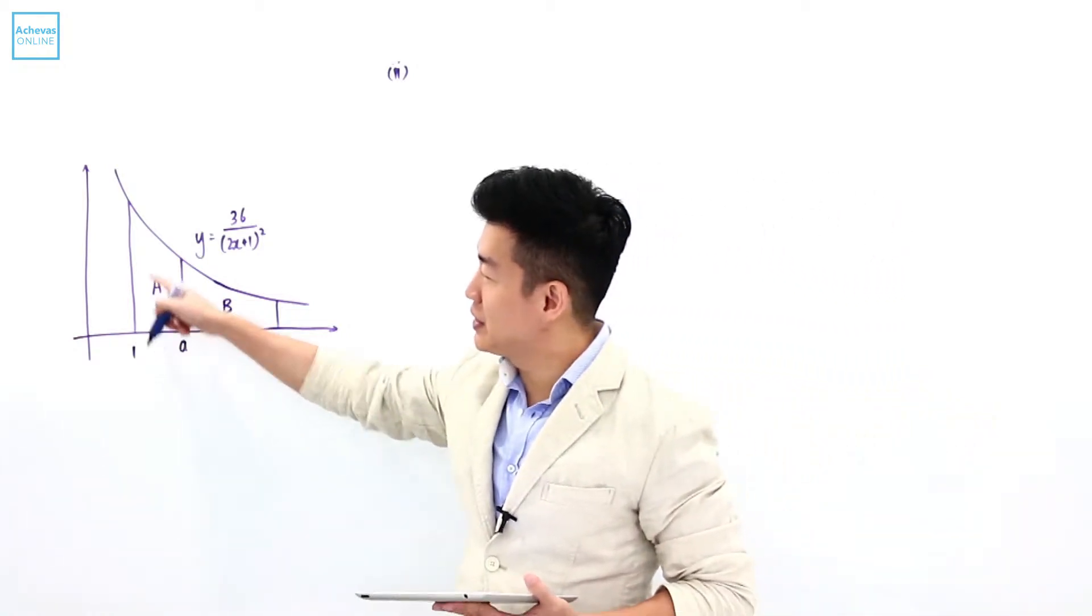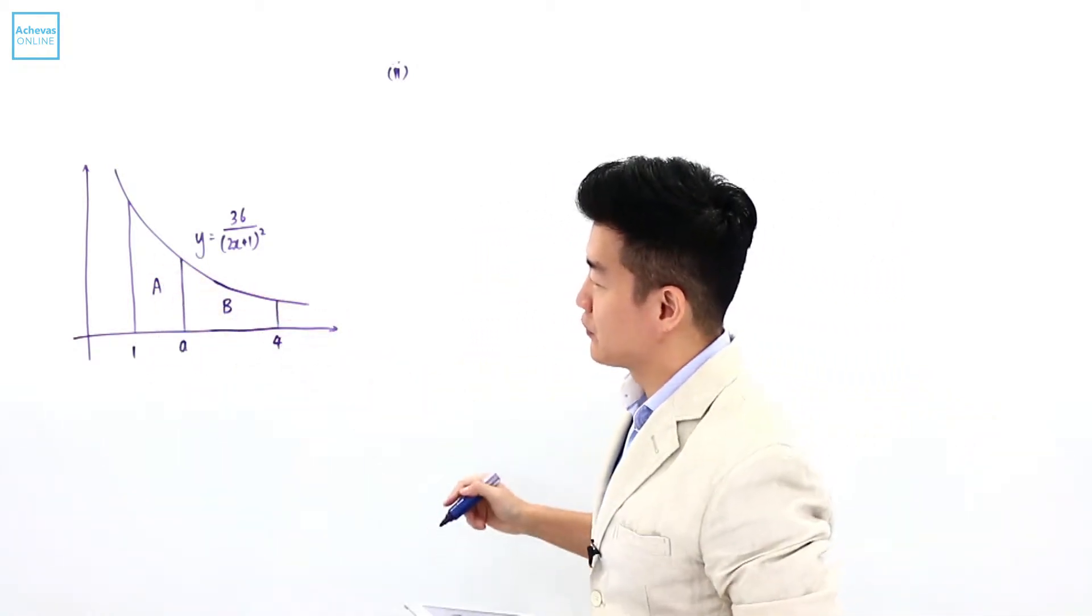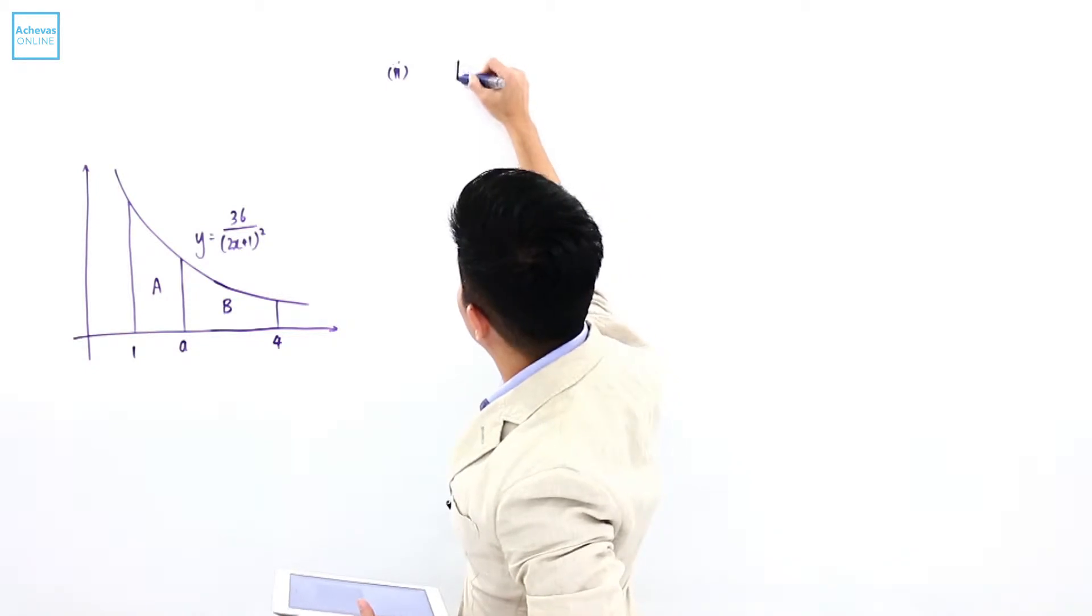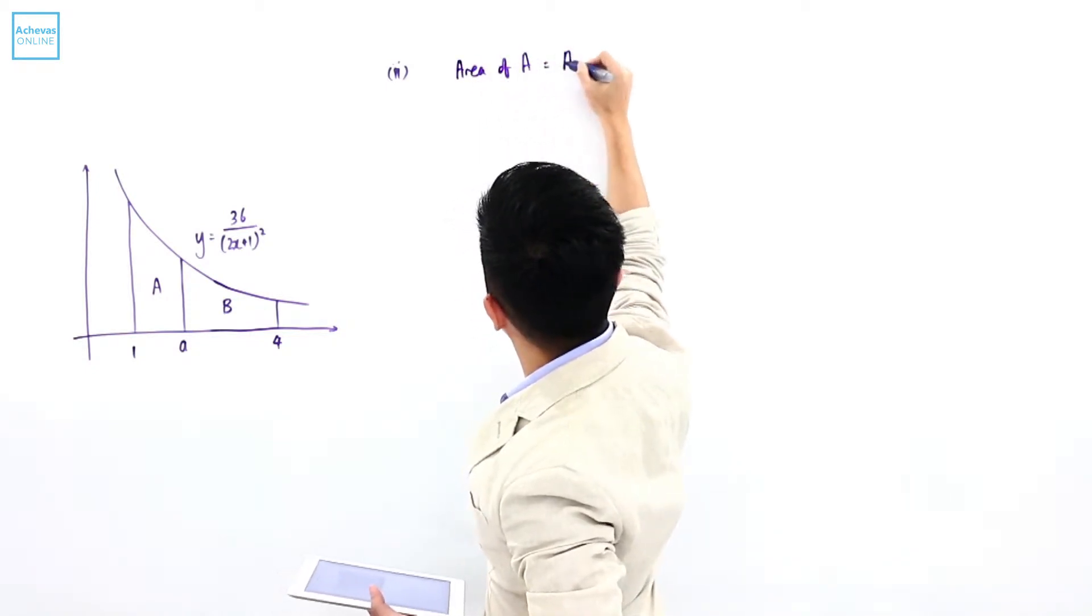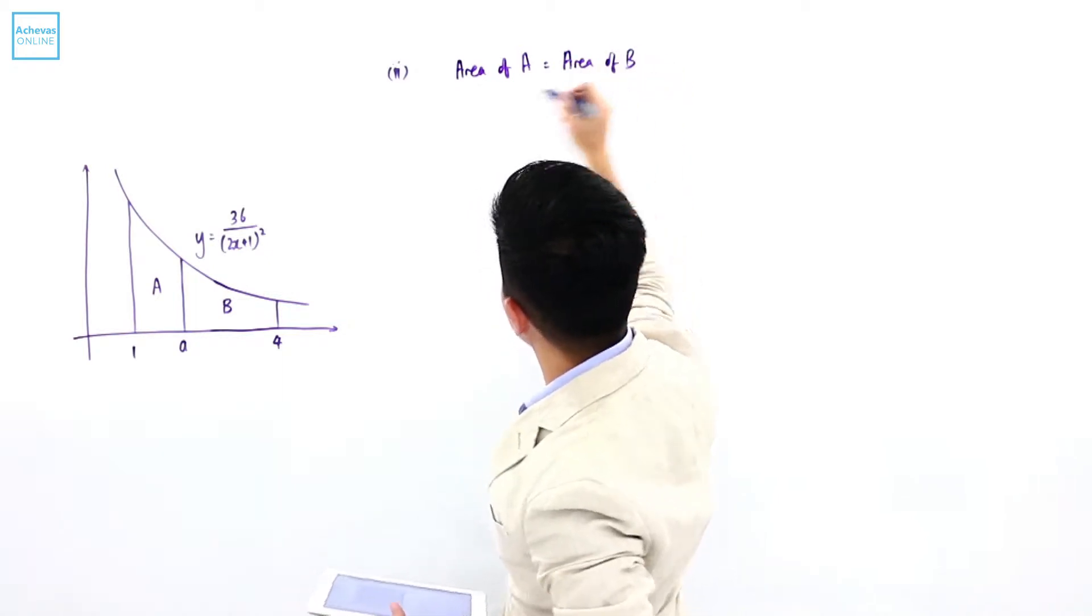It is given that the area of region A is the same as the area of region B.